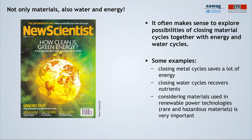It often makes sense to explore possibilities of closing material cycles together with energy and water cycles. For example, closing metal cycles saves a lot of energy. If we close water cycles, it allows recovery of nutrients. Also, for renewable energy, it is important to consider the materials used for such technologies, as they often contain rare and hazardous materials.